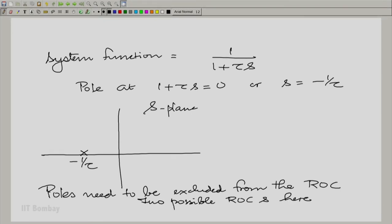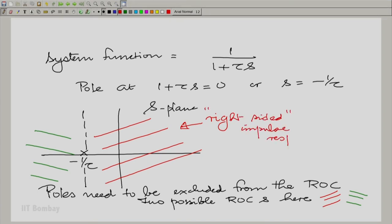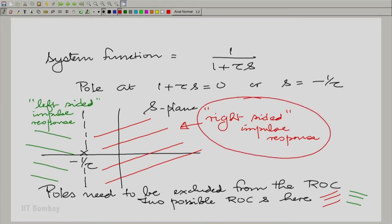Drawing a vertical line through this pole, the right shaded region is one region of convergence, and the green left shaded region is the other possible region of convergence. The right-sided region gives us the right-sided impulse response, and the left-sided region gives the left-sided impulse response. We must choose the right-sided impulse response on account of causality. If we want the system to be causal, its impulse response must be zero for all negative t, and that is only possible if the signal is right-sided. So we have a very clear choice to make here.